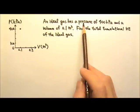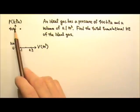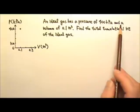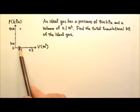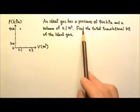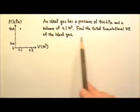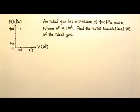An ideal gas has a pressure of 400 kilopascals and a volume of 0.1 cubic meter. Find the total translational kinetic energy of the ideal gas.